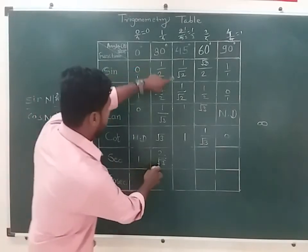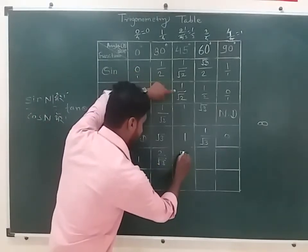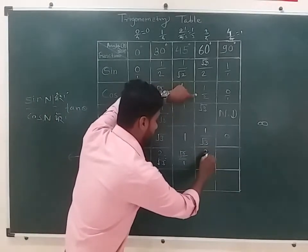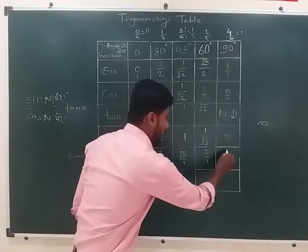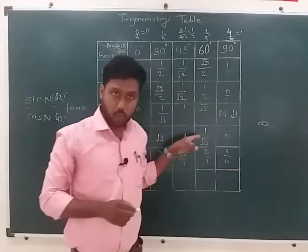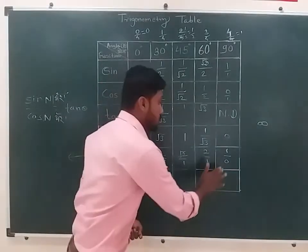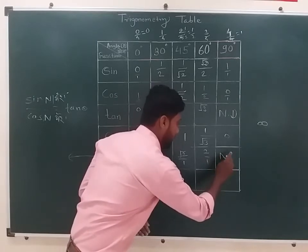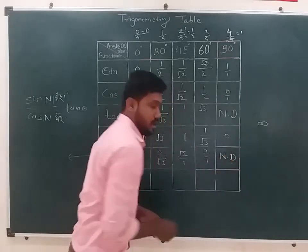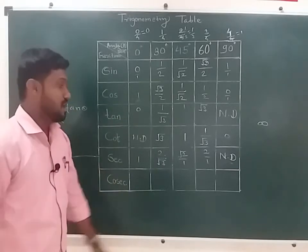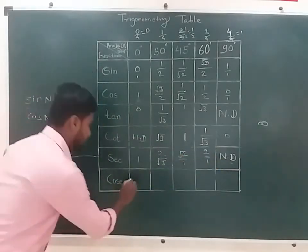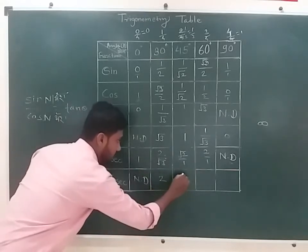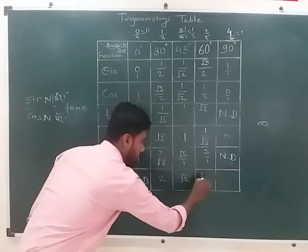It is the root of 2. What is the root of 1? What happens when it is 1 by 2? We have to be made for 2 by 1. If there is 1, the determinant is 3. We don't have the root of 2. What do you mean by not defined? Not defined. If you have 2s, then root 2 is 1, 2 by root 3.